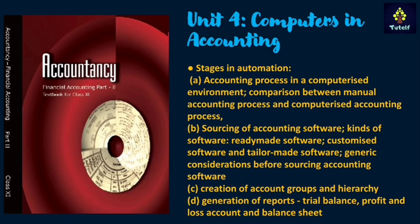There are four sub-topics under Stages in Automation that are removed. The first is Accounting Process in a Computerized Environment. Next is Comparison between Manual Accounting Process and Computerized Accounting Process. Next, Sourcing of Accounting Software and kinds of software — including ready-made software, customized software, tailor-made software, and generic considerations before sourcing accounting software.